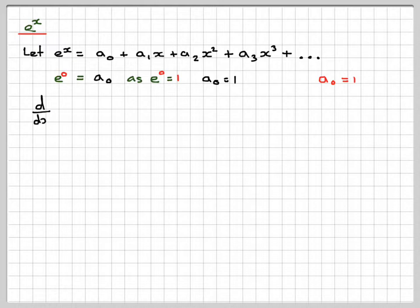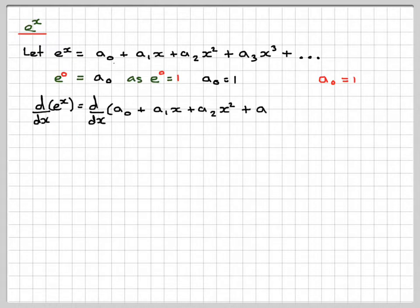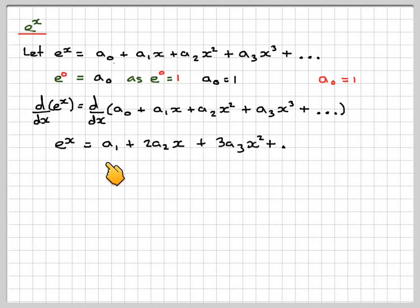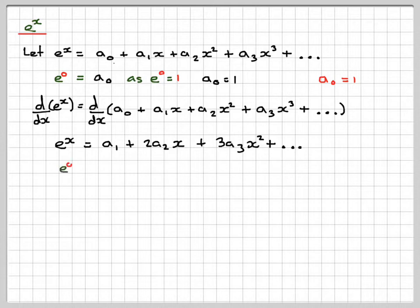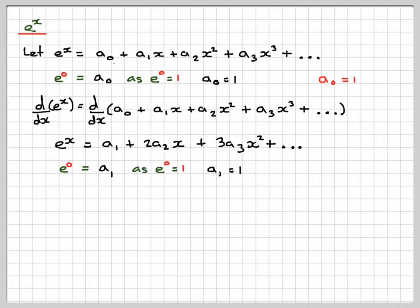We've got one term. For the next term, we take d/dx of e to the x, differentiating both sides. The differential of e to the x is itself, and differentiating the right side gives a1 plus 2a2x plus 3a3x squared. Setting x equal to 0, e to the 0 is 1, and the x terms disappear, so a1 is also equal to 1.